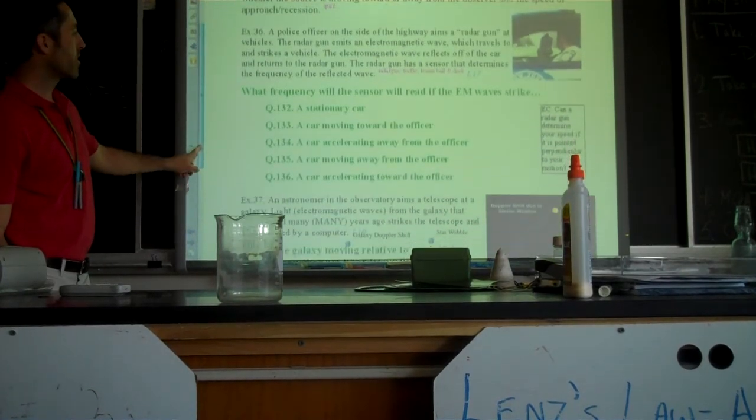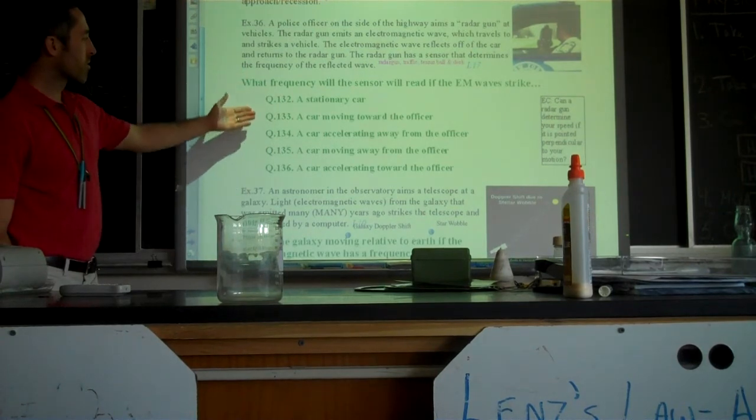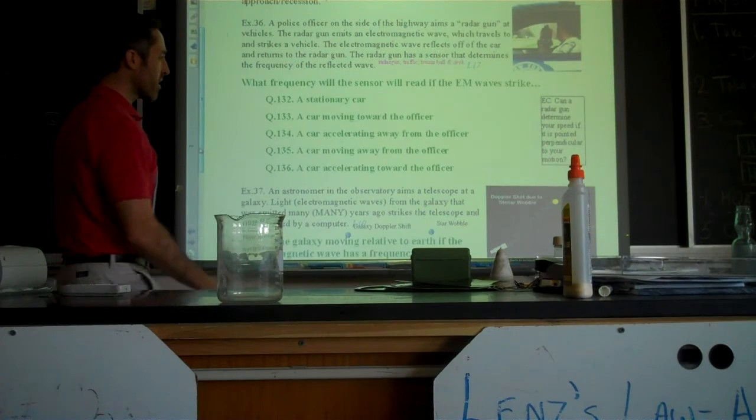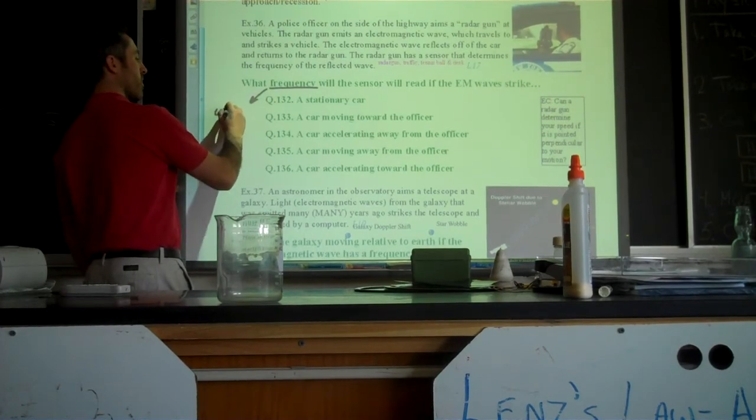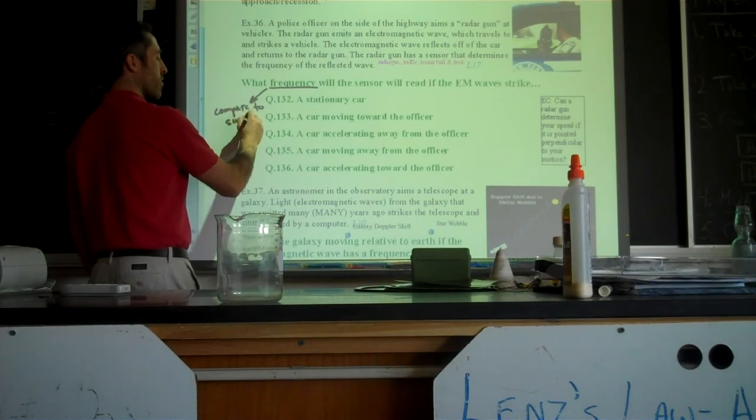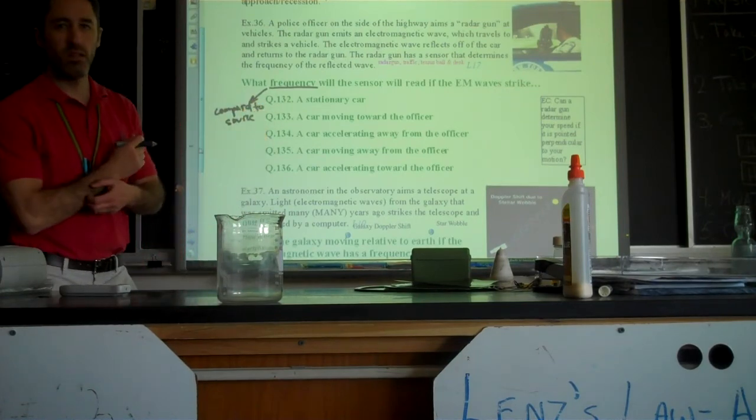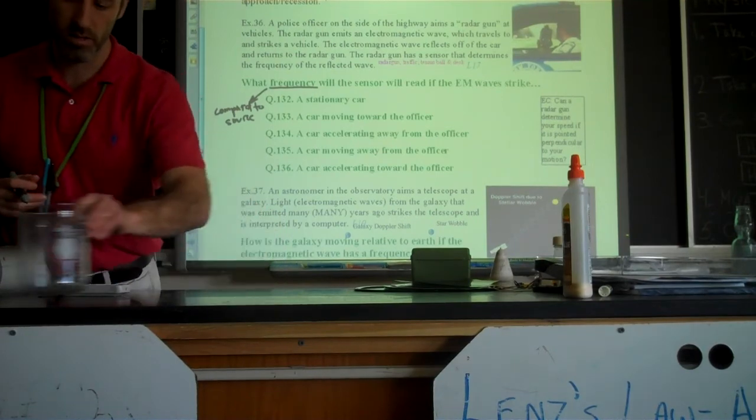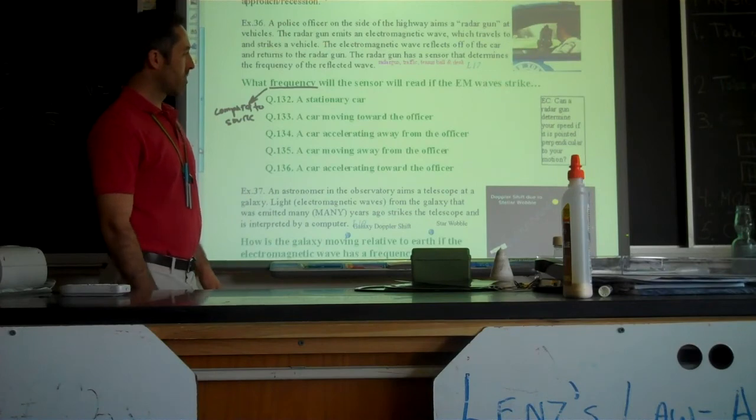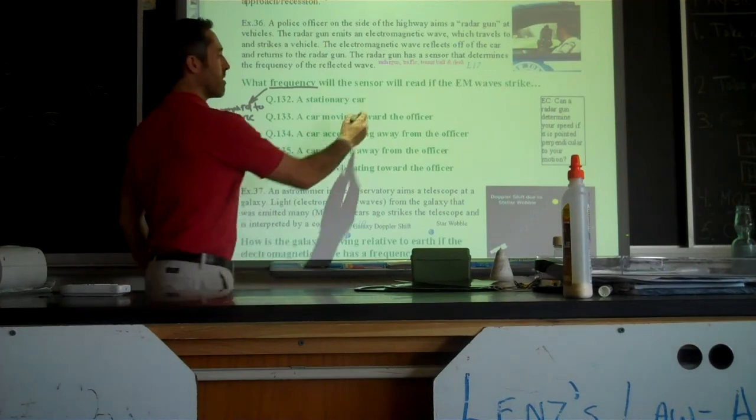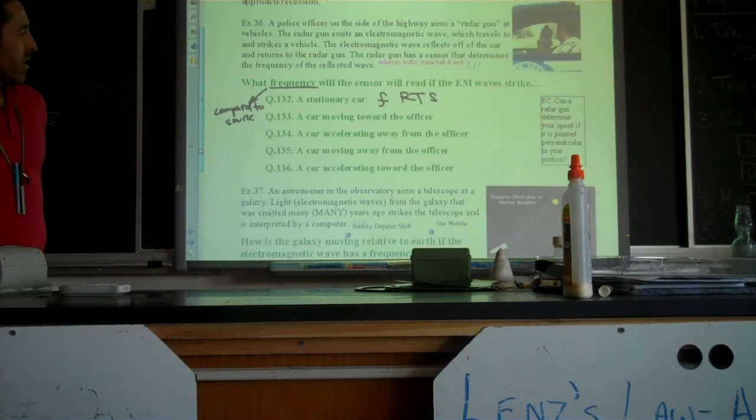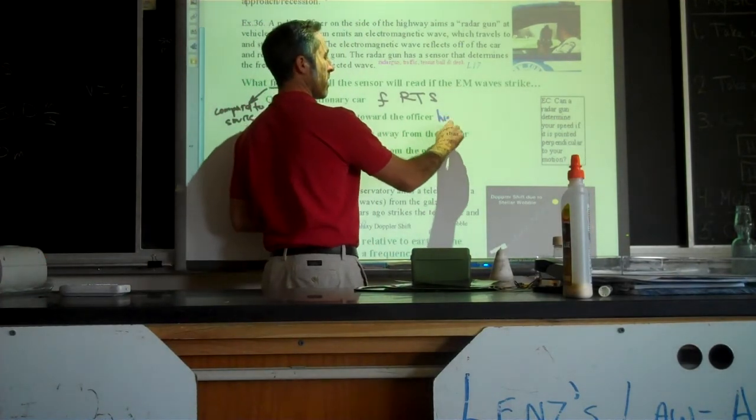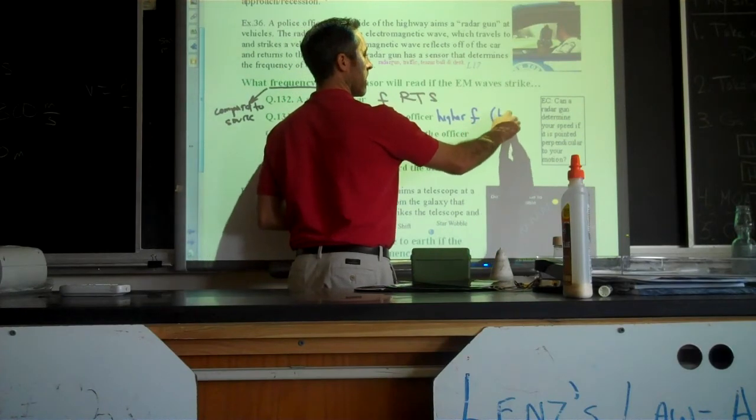What you'll see right here is basic scenarios. What's the frequency going to say if the car is? So this is compared to the source or the actual radar gun itself. Compared to the actual radar gun itself or the source, a stationary car, how will the frequency appear? That it remains the same? Yeah. The frequency remains the same. You don't notice any frequency shift. No Doppler effect. How about if the car is moving toward the officer? Increasing. Increased frequency. So you can have a higher frequency, a.k.a. a blue shift.